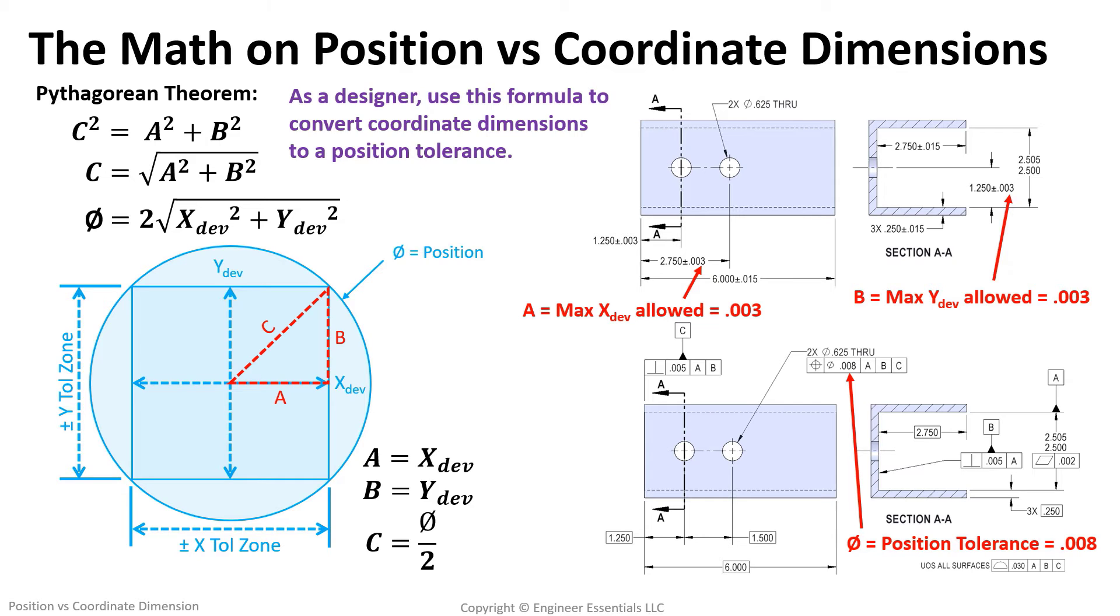Don't forget that our locational tolerance is assigned via the feature control frame so we need to change those tolerance dimensions to basic dimensions in order to establish true position. And just like that, without adding any additional clearance in location, we have given our quality department 57% more tolerance to work with.